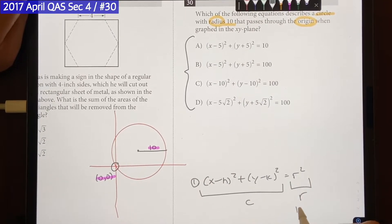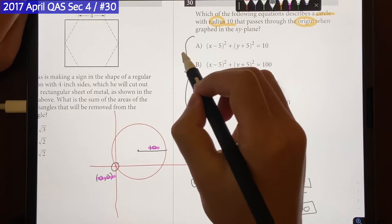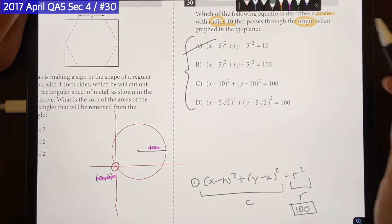And if you look at the choices B, C, D has that right here but A doesn't which means A is not going to be our answer.